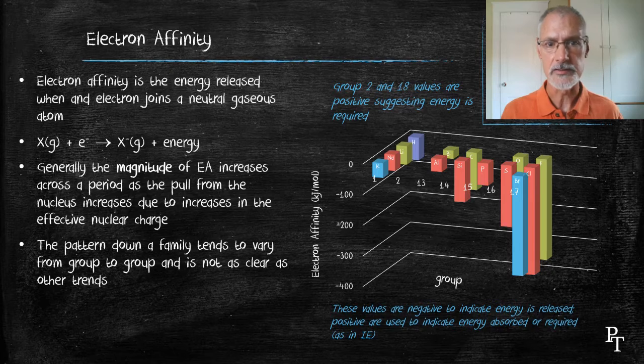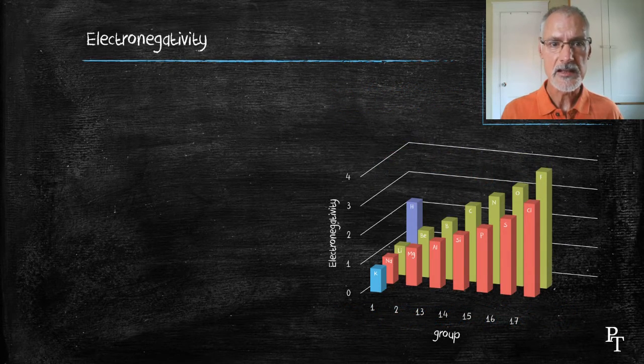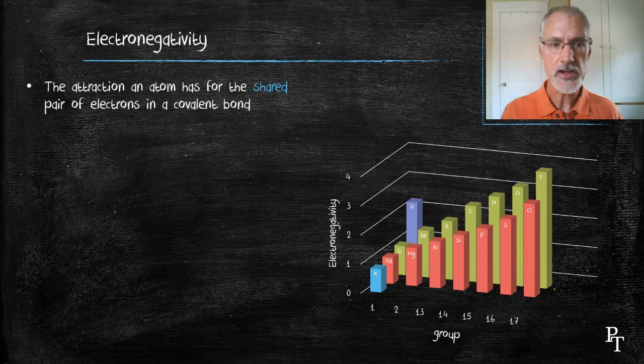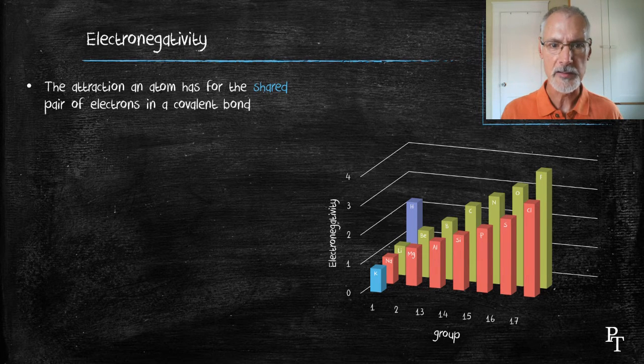The final trend to address is electronegativity. Electronegativity is a measurement of the attraction that an atom has for the shared pair of electrons in a covalent bond.